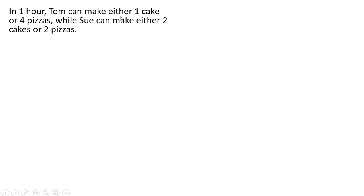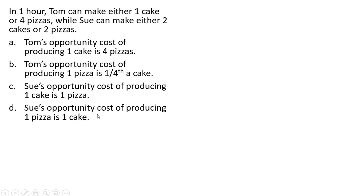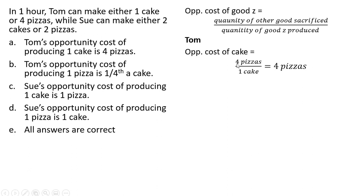In one hour, Tom can make either one cake or four pizzas, while Sue can make either two cakes or two pizzas. This is about calculating opportunity cost. The opportunity cost of good Z equals the quantity of the other good sacrificed divided by the quantity of good Z produced. For Tom, the opportunity cost of cake: he sacrifices four pizzas to get one cake, so the opportunity cost of cake for Tom is four pizzas.